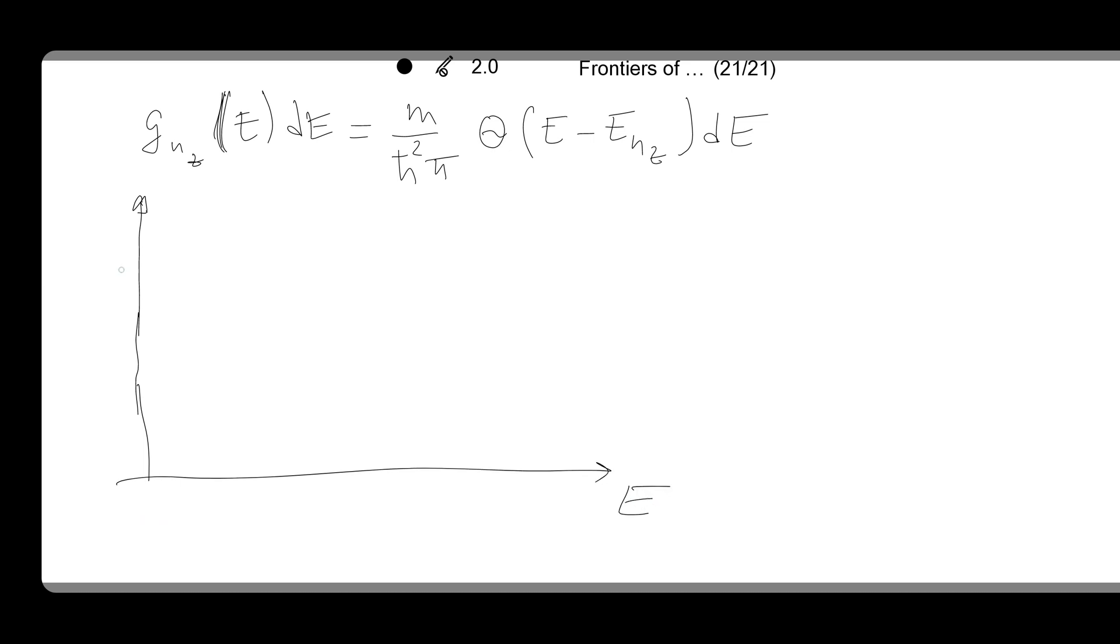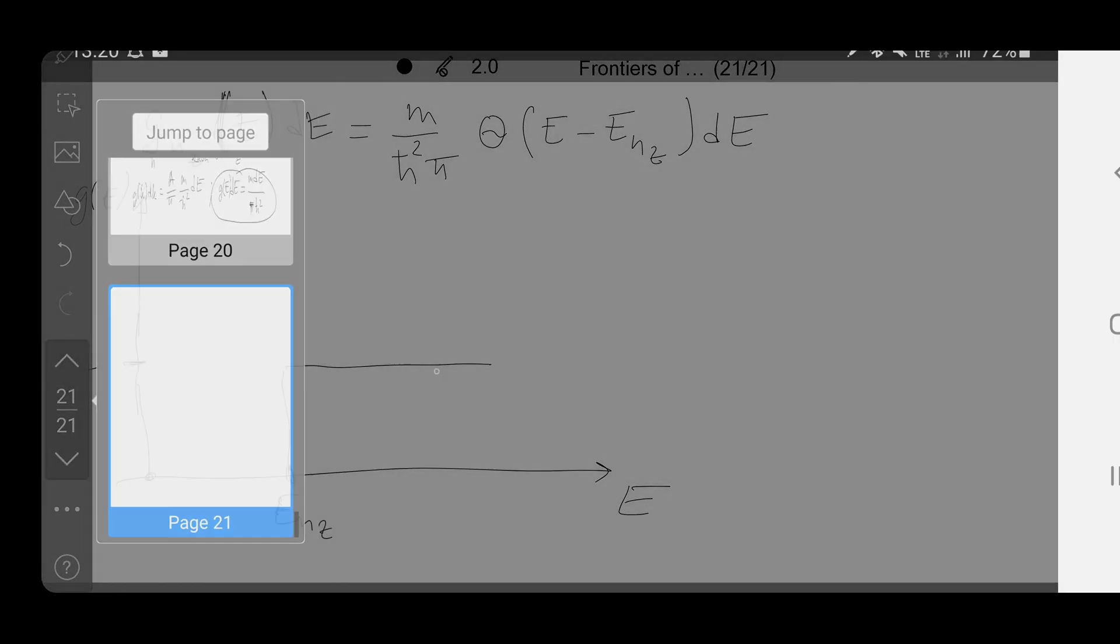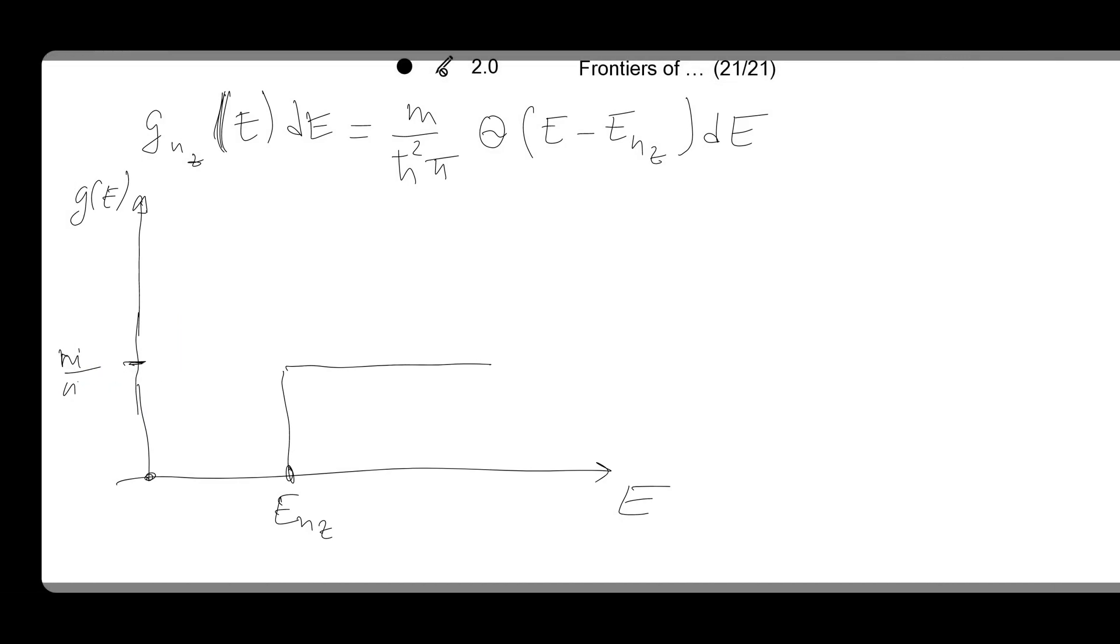We have here energy and here is the g of E. And so at zero, at zero energy there are no states. At some point you will have at some energy which is Enz where this starts. You will have a step and the value of density of states will be m over pi h-bar squared.